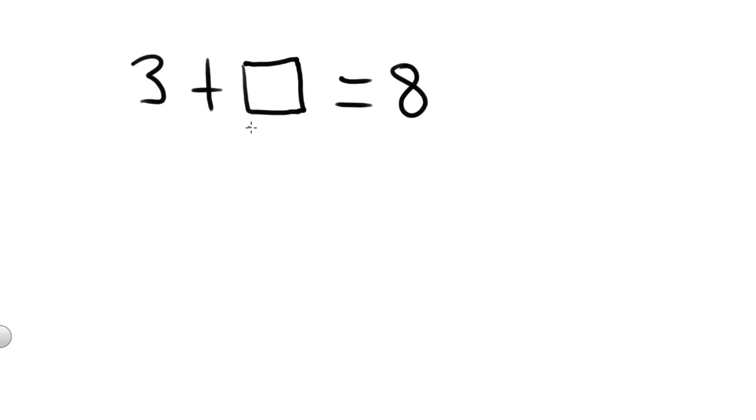Usually in algebra, we don't use boxes to represent the unknown. We usually use a letter. So often X is the letter of choice, but you could use any letter, A, B, Y, or Z, doesn't matter. So 3 plus X equals 8.